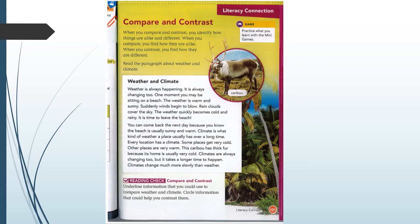Weather is always happening and it is always changing too. One moment you may be sitting on a beach — the weather is warm and sunny. Suddenly winds begin to blow, rain clouds cover the sky, and the weather quickly becomes cold and rainy. You can come back the next day because you know the beach is usually sunny and warm. Climate is what kind of weather a place usually has over a long time. Every location has a climate. This caribou has thick fur because its home is usually very cold. Climates are always changing too, but it takes a longer time — climates change much more slowly than weather.